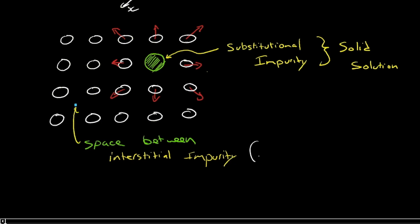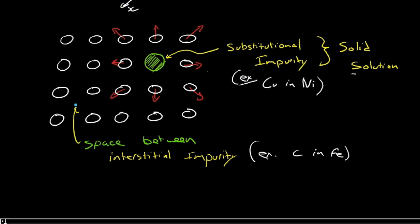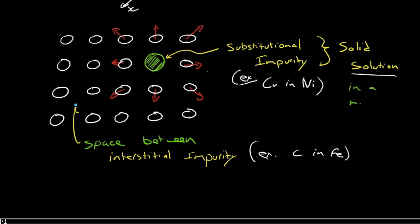An example of an interstitial impurity would be carbon in iron. An example of a substitutional impurity would be perhaps copper in nickel. They're both the same size and have the same crystal structure, so they can substitute for one another. So there's a couple of impurities - point defects that we have. When we have a solid solution in a metal, we have another name that I'm sure many of you are familiar with. In a metal, we call that an alloy. We're mixing two elements together to form an alloy.